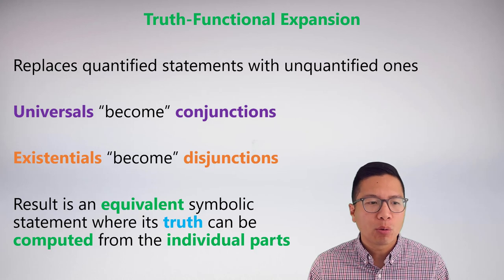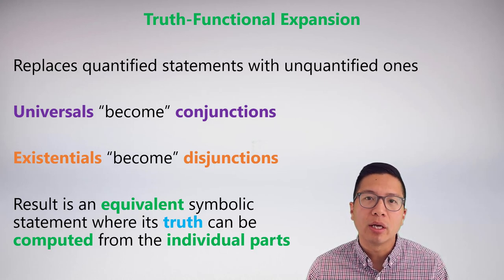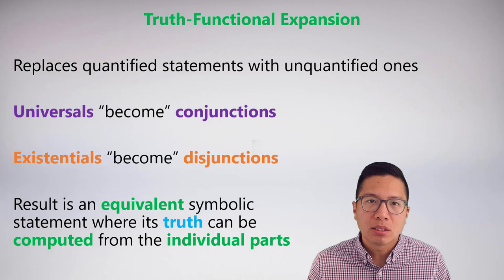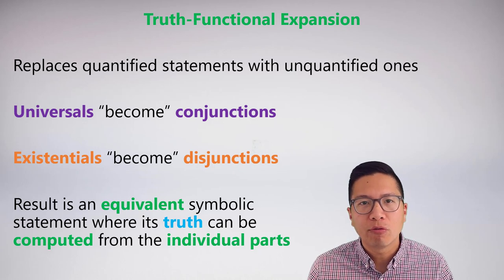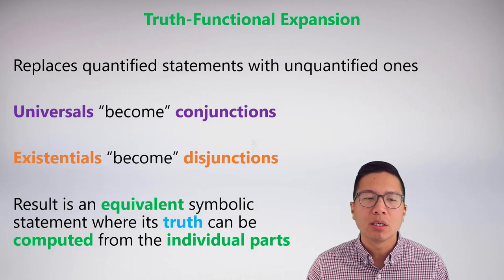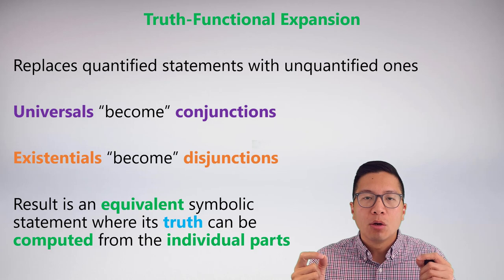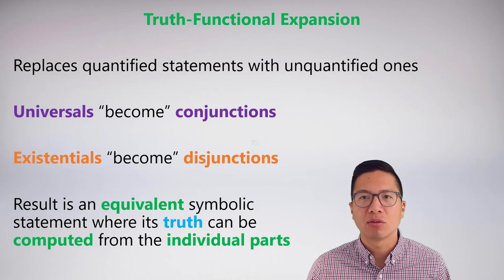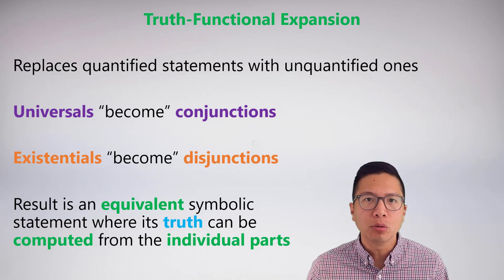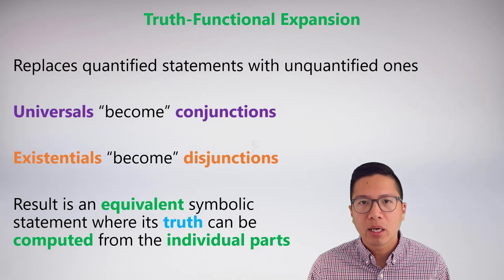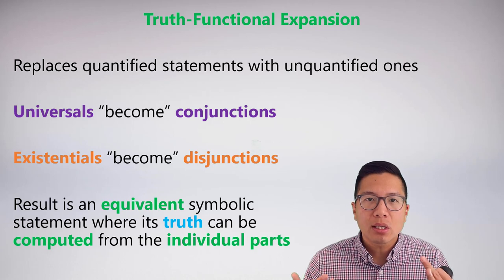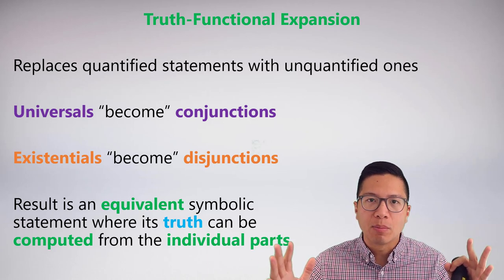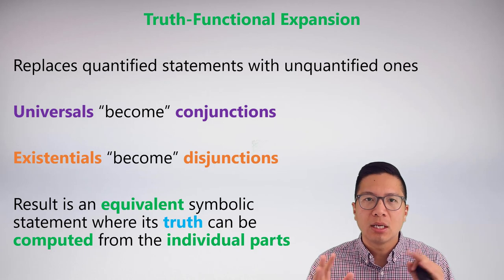A truth functional expansion replaces quantified statements with an equivalent unquantified statement that looks essentially just like sentential logic. The universal quantifier is always paired with a conjunction—it must be true for all members: this one, and that one, and that one. The existential quantifier always expands to disjunctions because it means at least one—I don't know if it's the first, second, or third, but as long as at least one has the property, that's captured by OR. The result is a perfectly equivalent symbolic statement that is now truth functional, so the truth properties can be computed from its individual parts, essentially like a truth table.